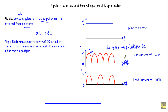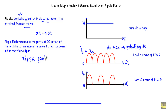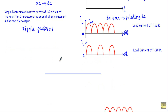Ripple factor measures the amount of AC component in the rectifier output. The ripple factor will measure the amount of AC component present in the rectifier output. In other words, ripple factor measures the purity of the DC output of the rectifier. If we get a pure DC waveform there will be no pulsation, and therefore the ripple factor in the ideal case is zero because there will be no AC component in the pure DC voltage.